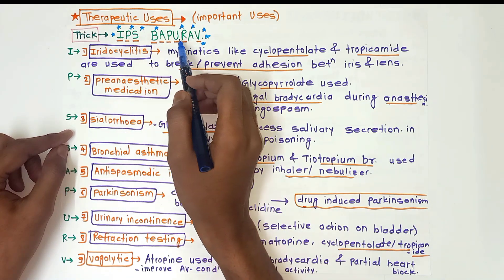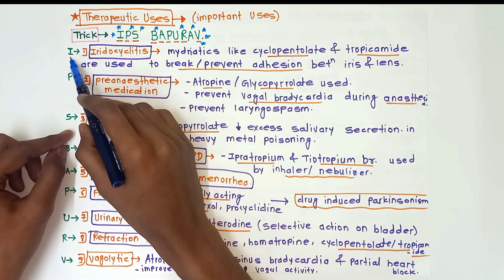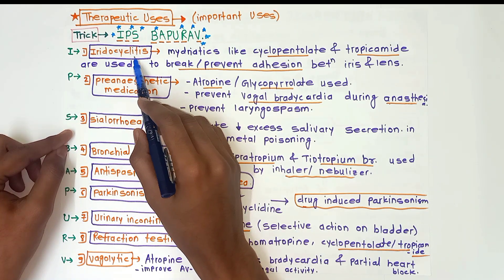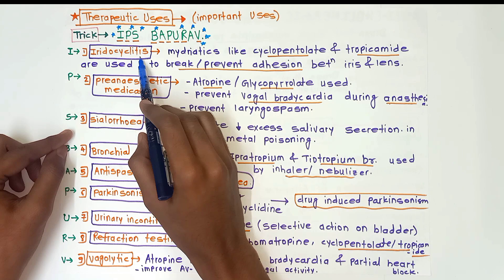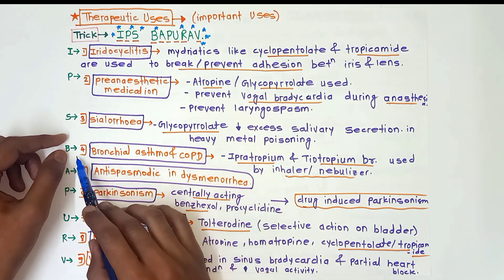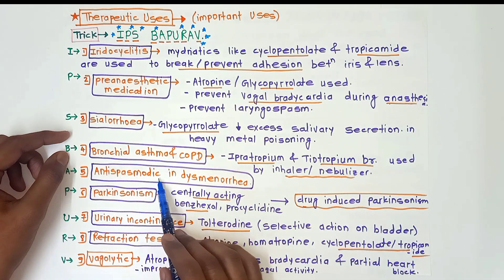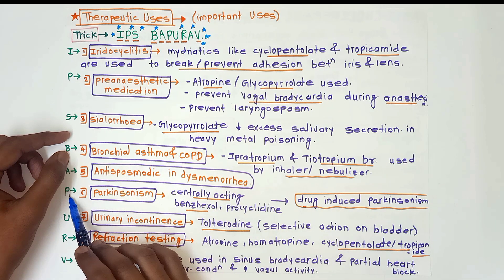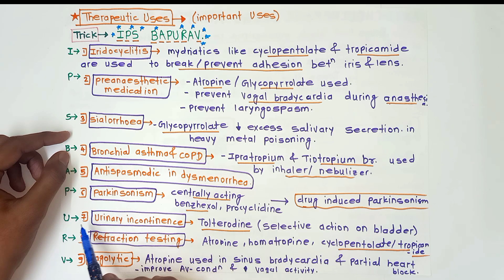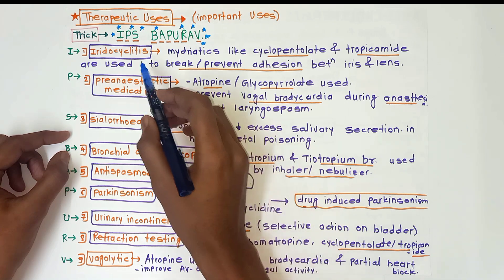The trick to remember the therapeutic uses is the mnemonic 'IPS BAPURAV': I for iridocyclitis, P for pre-anesthetic medication, S for sialorrhea, B for bronchial asthma and COPD, A for antispasmodic in dysmenorrhea, P for parkinsonism, U for urinary incontinence, R for refraction testing, and V for vagolytic.